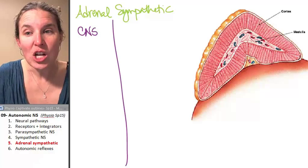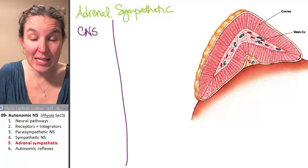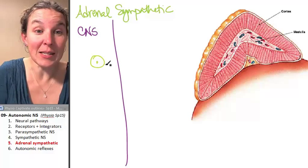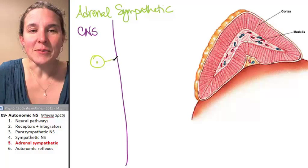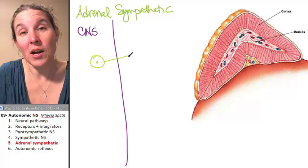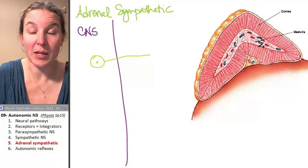First of all, just like you would expect, in this setup we have a cell body, a sympathetic neuron. Here's the deal. I'm not going to be able to draw this inside that adrenal medulla because you wouldn't be able to see it.